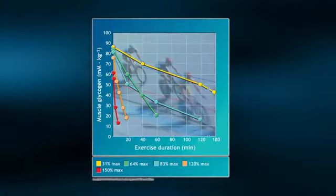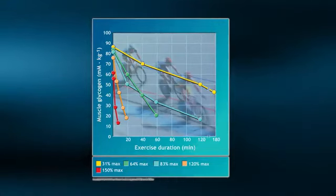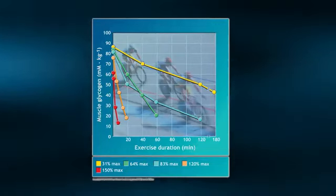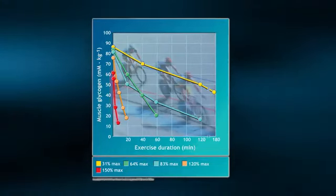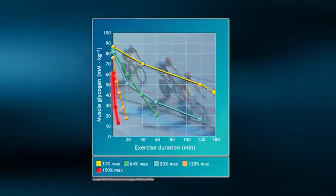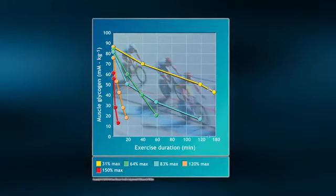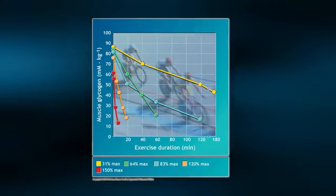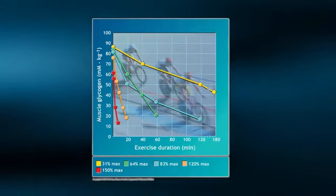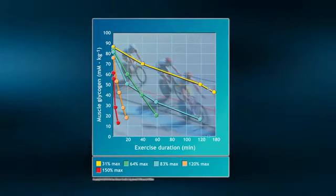Let's examine more closely the relationship between the exercise intensity and glycogen breakdown. Shown here are individuals exercising at five distinct intensities. Notice that at the highest exercise intensity, 150% of max, muscle glycogen is being broken down and depleted at a very high rate.